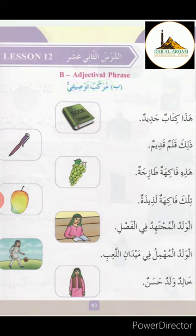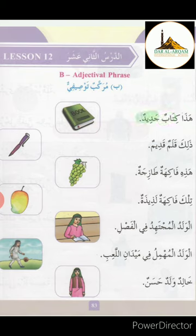In this lesson, we will learn describing word and described word — adjective. هَاجَا كِتَابٌ جَدِيدٌ. هَاجَا means 'this', كِتَابٌ means 'book', جَدِيدٌ means 'new'. كِتَابٌ جَدِيدٌ means 'new book'. هَاجَا كِتَابٌ جَدِيدٌ — This is a new book.